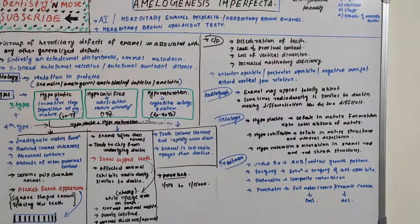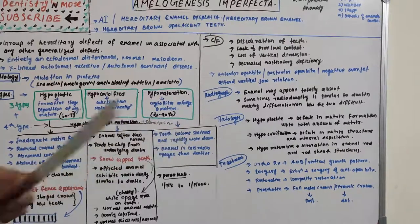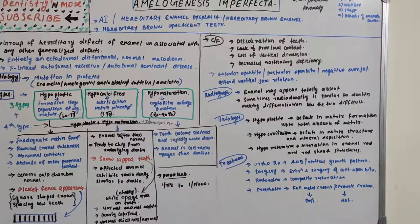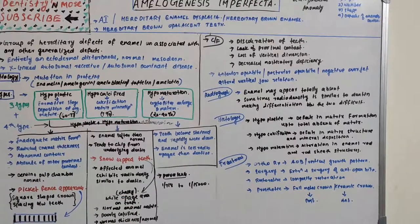In hypomaturative AI, the teeth become easily stained and rapidly wear down because the maturation process is impaired. The enamel is less radio-opaque than dentine in this type. The prevalence of Amelogenesis Imperfecta overall ranges from 1 in 700 to 1 in 15,000.